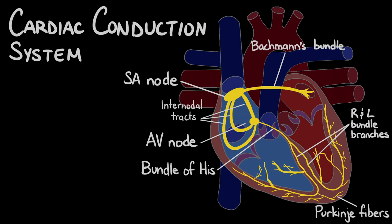The coordinated contraction and relaxation of the heart muscle cells is essential for the effective pumping of blood throughout the body. Any disruptions in the normal functioning of the cardiac conduction system can lead to abnormal heart rhythms or arrhythmias, which can have serious health consequences if left untreated.